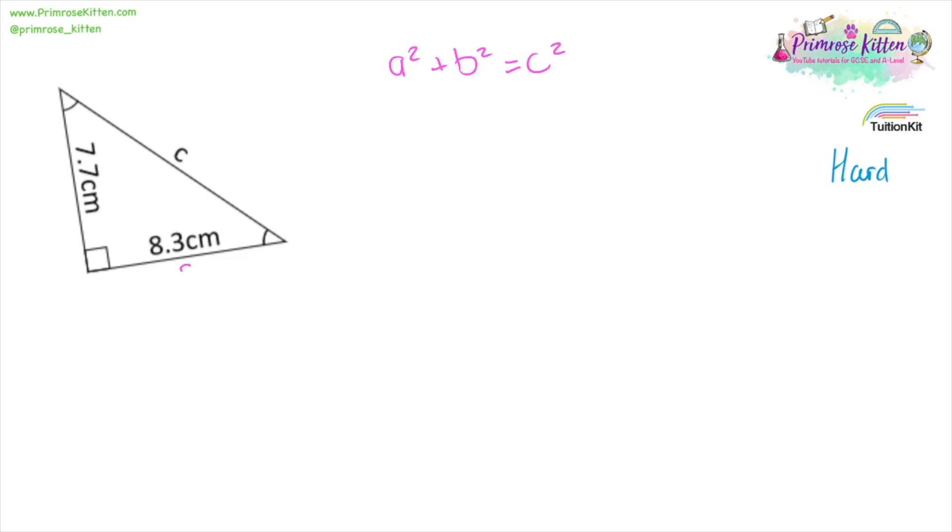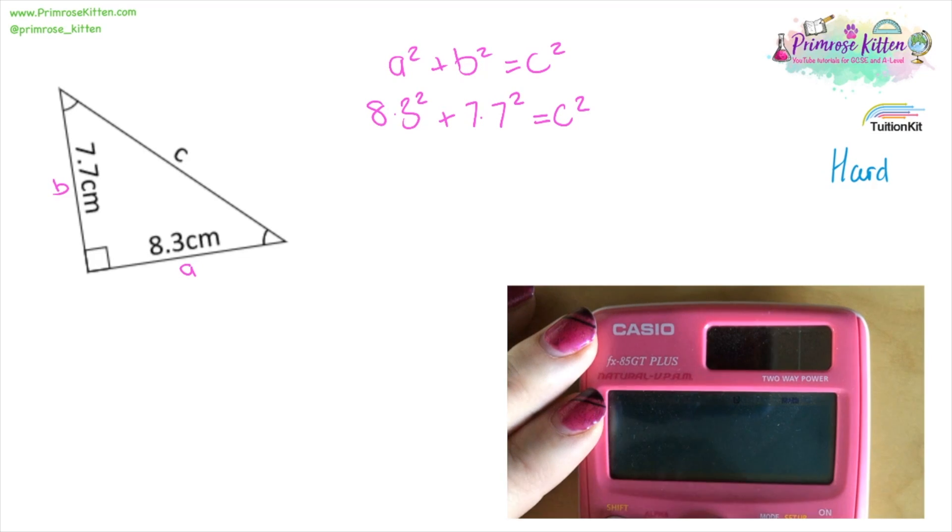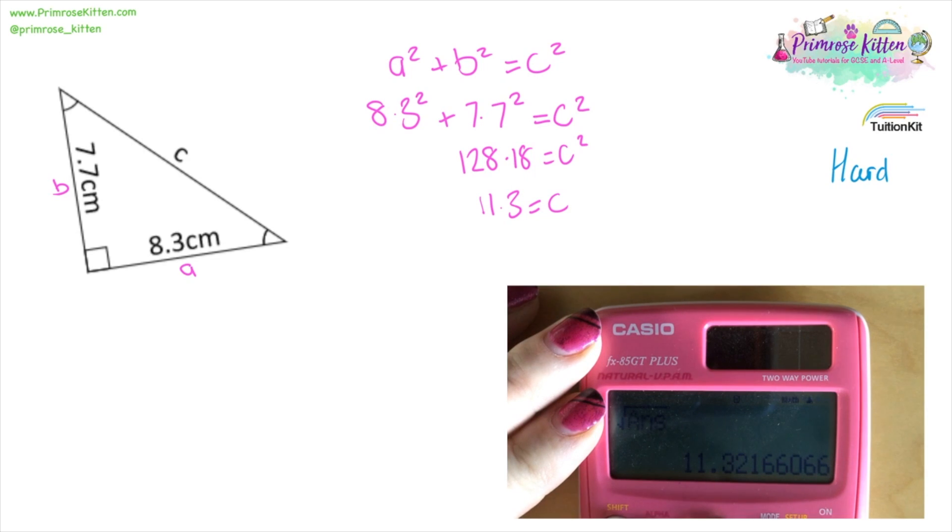A more traditional one now. Here we have A and B. So 8.3 squared plus 7.7 squared equals C squared. Again, hopefully you're confident with your calculator. For this sort of thing, you can just type it straight into your calculator, giving us 128.18 equaling C squared and 11.3 for C.